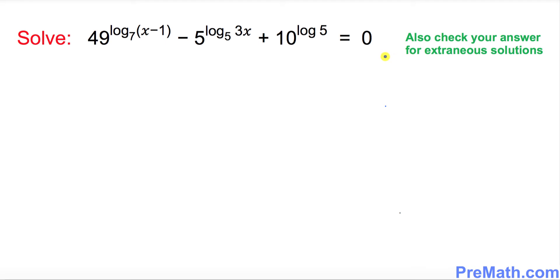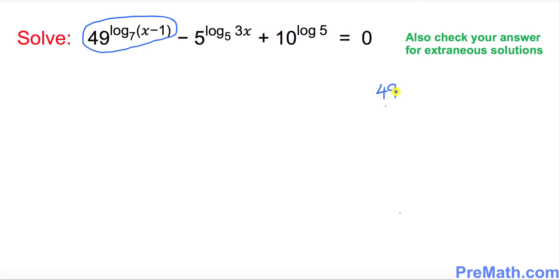Before we get started, we want to make things a little bit easy. I want you to look at this part in this problem — we want to simplify this part. So 49 to the power of log base 7 of (x minus 1).